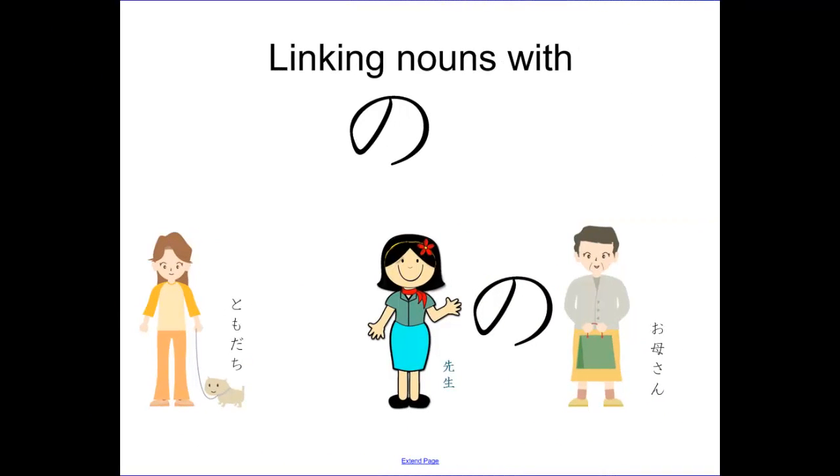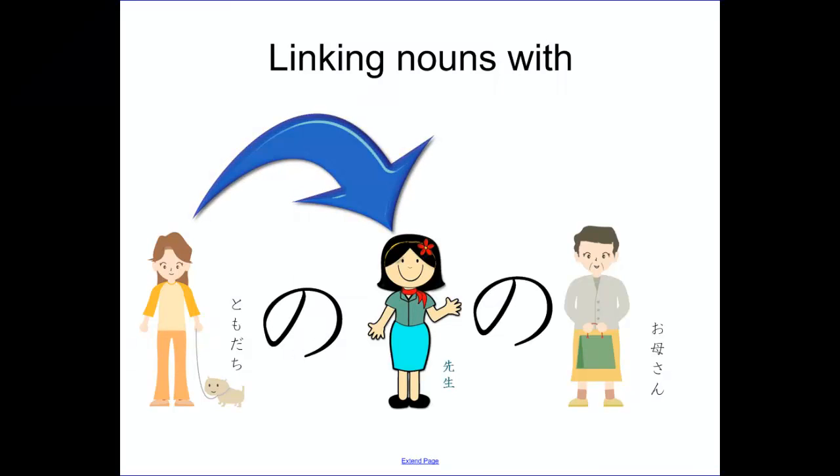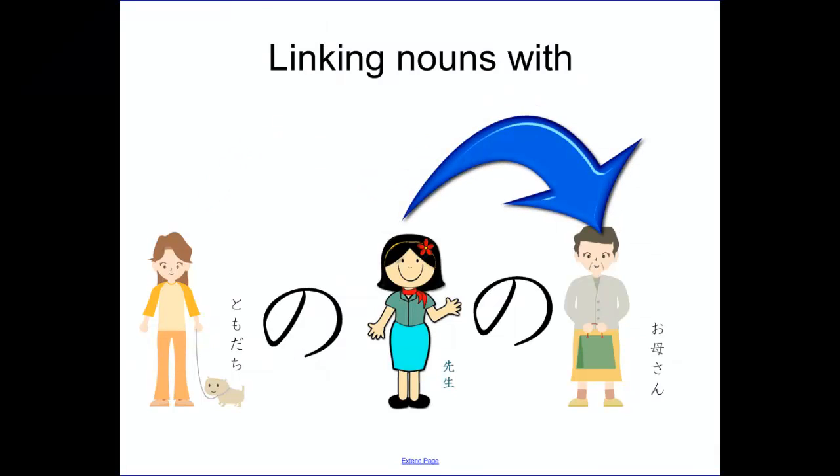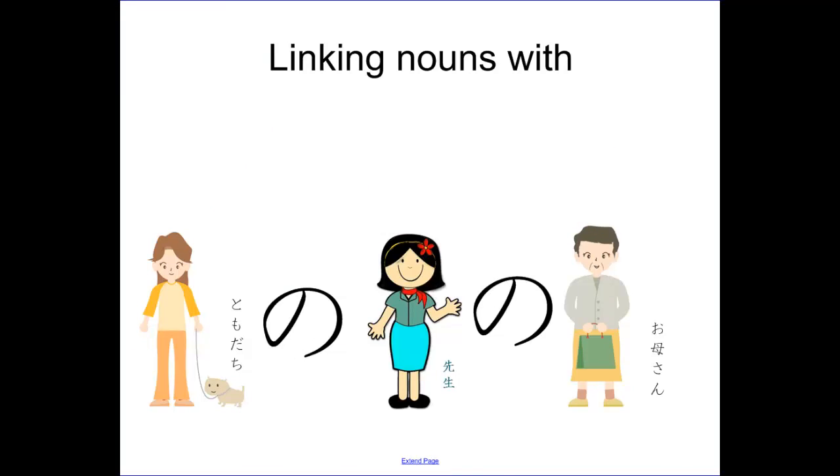You can link more than two nouns together using this system, so I've added another noun. Over here I put my friend, tomodachi. So now we have my friend's teacher's mother, and I'm going to make that work in Japanese by adding another particle NO. And that gives us tomodachi no sensei no okasan, my friend's teacher's mother.